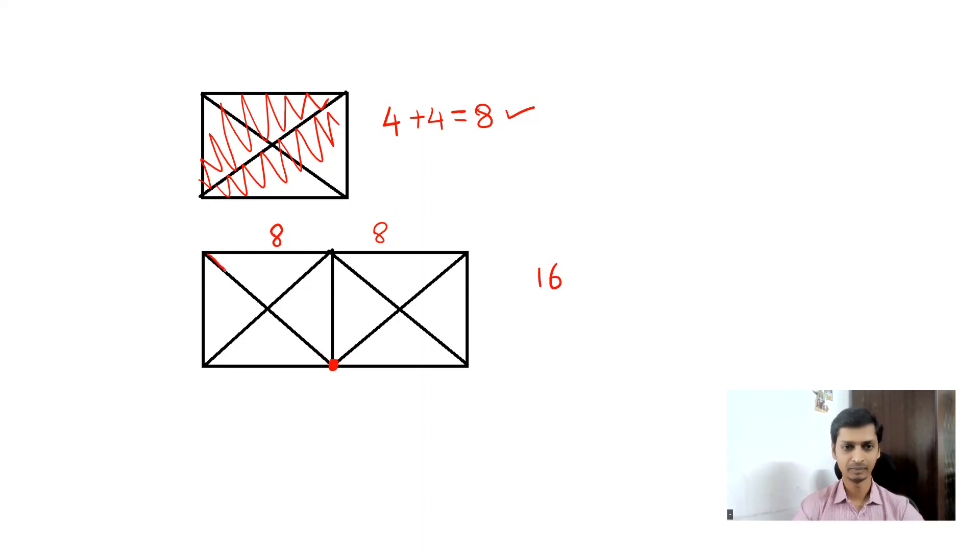That means you have one triangle here. Look at this - this is one triangle. And you have another junction here. This is another triangle. For each junction you'll get one triangle, so it's 16 plus 2 - you get 18 triangles.